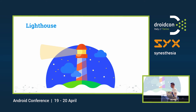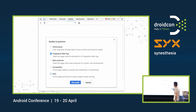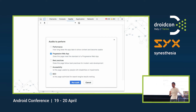Lighthouse is also a Google tool. It's inside the DevTools in the Audit tab. You can run audits on performance, best practices, and more. We're specifically interested in the progressive web app part — if you're curious whether your application qualifies as a progressive web app, you just need to run this tool.